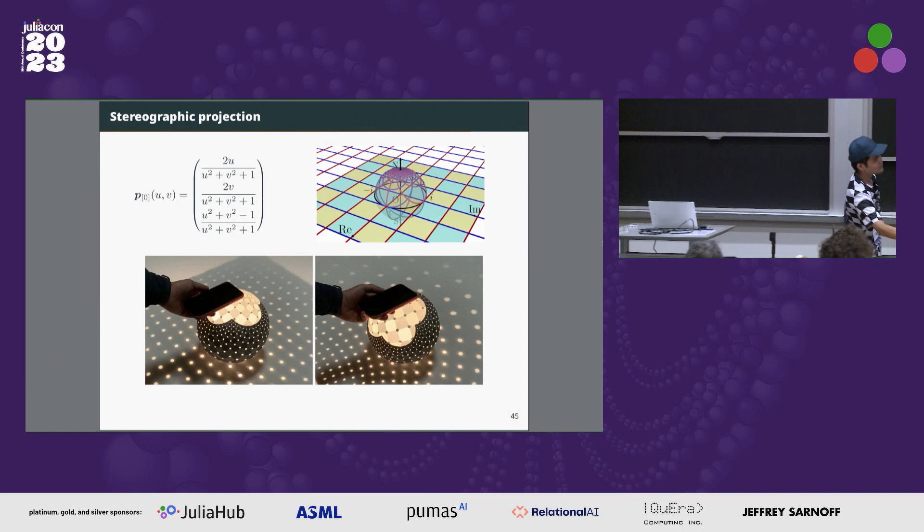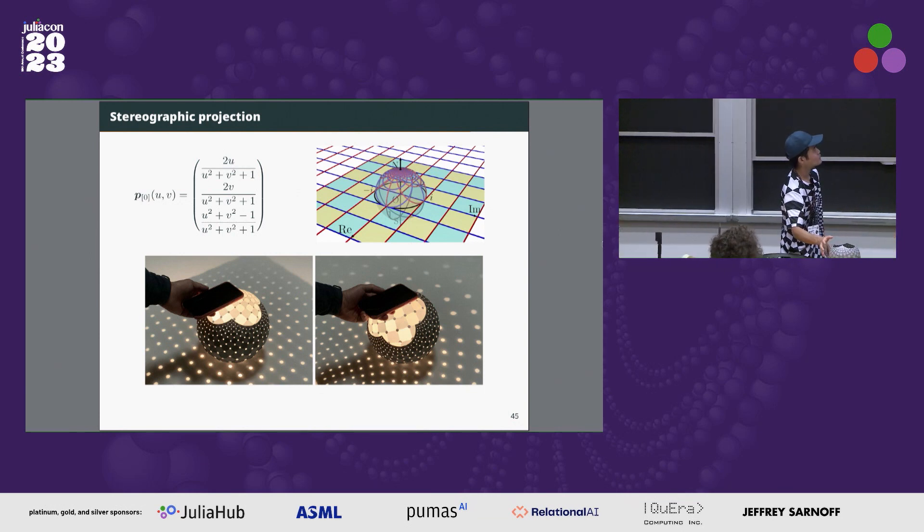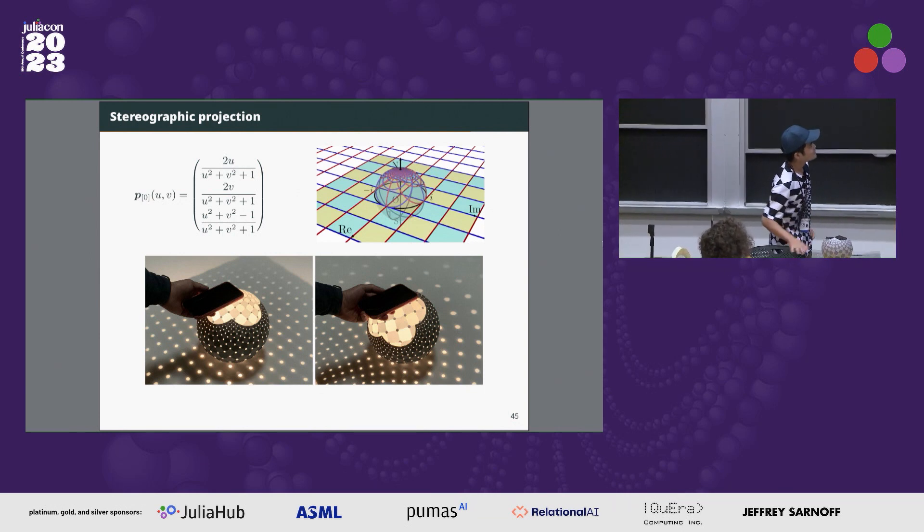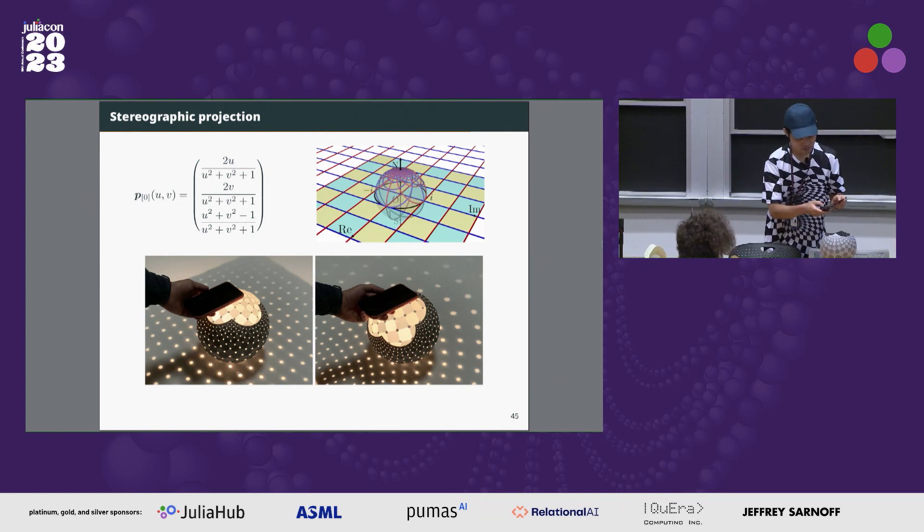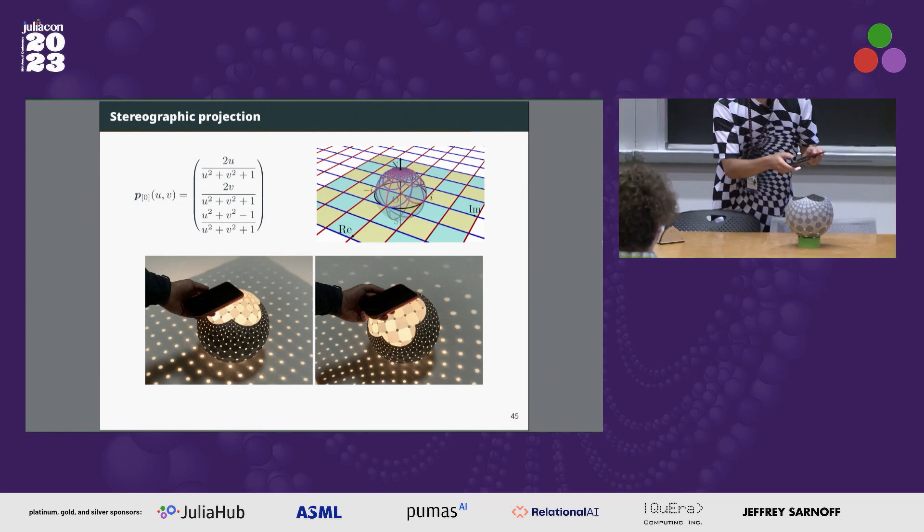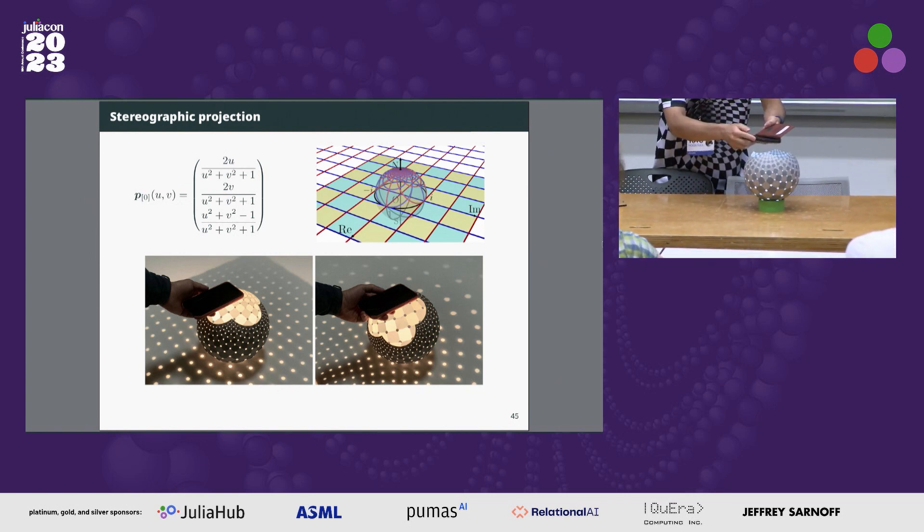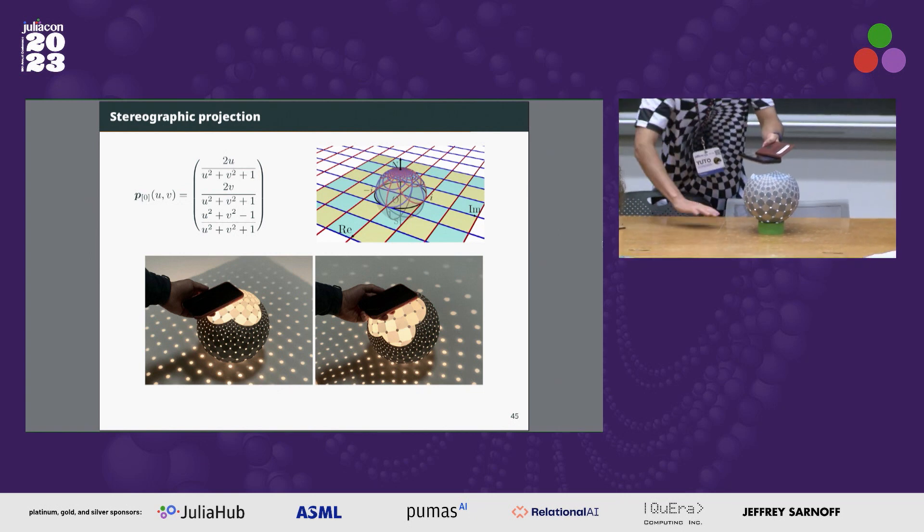And this is a sphere using hyperbolic stereographic projection. If we light this model like this, we can find the points are on the sphere.